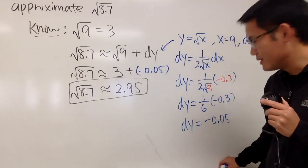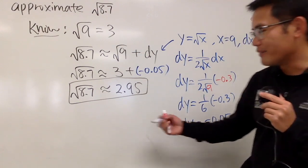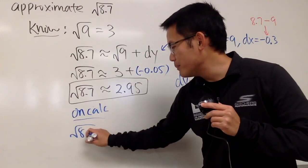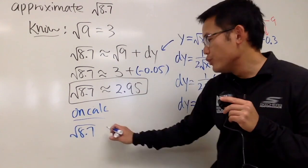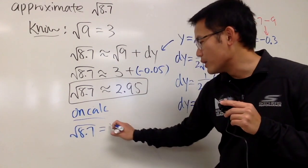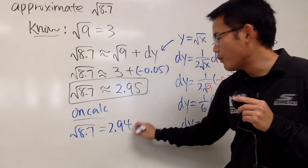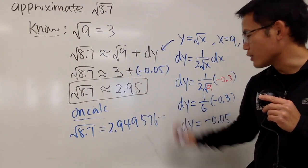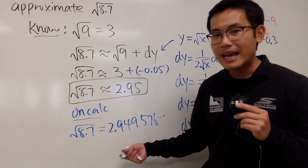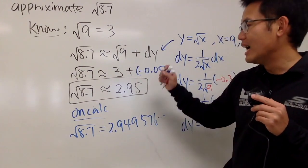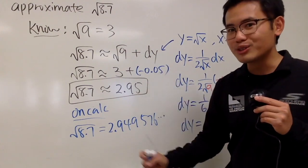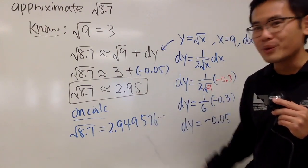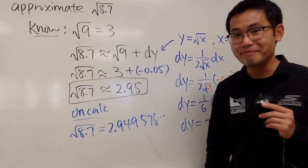For those who are interested, if you use a calculator and enter square root of 8.7, you get 2.949576 and so on — this is irrational. Notice that our approximation is very close to the calculator's answer. Very cool, isn't it? That's it.